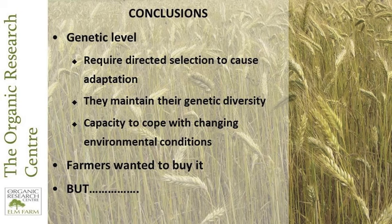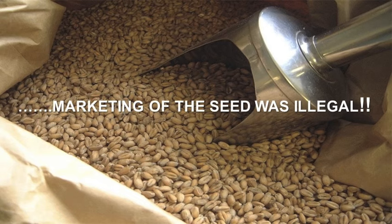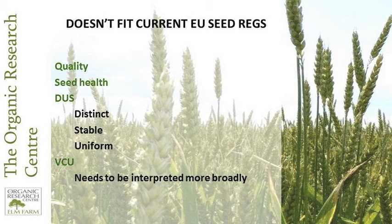We knew that farmers wanted to buy it. The farmers that had it on their farm liked it and saw it as a positive. However, we were in a situation where marketing the seed was illegal because it doesn't meet the seed regulations. It meets quality — no problem there — and seed health we want to meet. But the other requirement, the DUS — distinct, stable and uniform — it clearly isn't that. We don't want it to be distinct, stable and uniform, because we want that plasticity for it to be able to move.